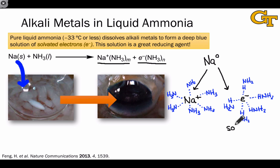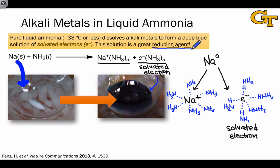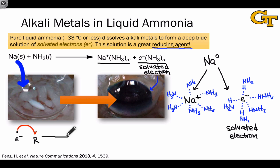This species is what we call a solvated electron, and it's what gives rise to the blue color of the solution. It's an extremely strong reducing agent — we've essentially generated a bare electron, a single dot in a Lewis structure diagram without any accompanying atom. If we let this electron reduce a generic species R, we are literally giving an electron to R. If R starts out neutral, the resulting product contains both a radical and a negative charge — what we call a radical anion.